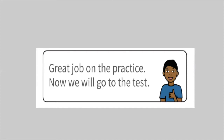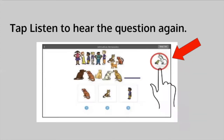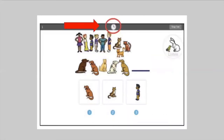Adults present can now let the student answer questions independently and only support with technical problems. Listen to the question as it is read out loud to you. To hear the question again, tap the listen button in the top right. If you see a picture of a clock at the top of the screen, time is almost up for the question. If you do not choose an answer in time, the test will move on to the next question.